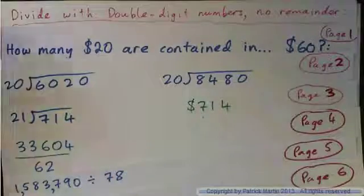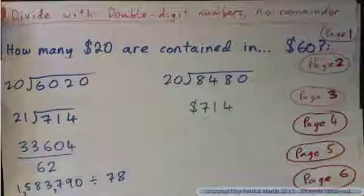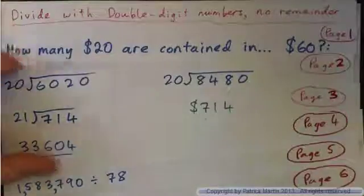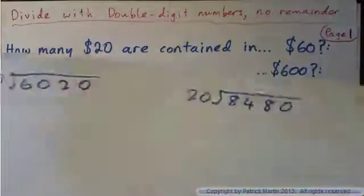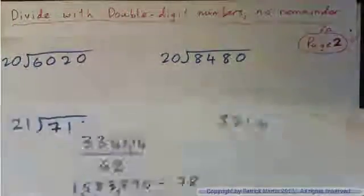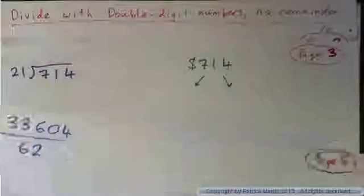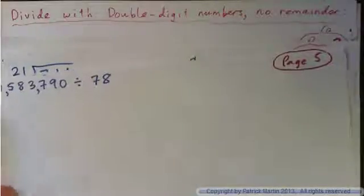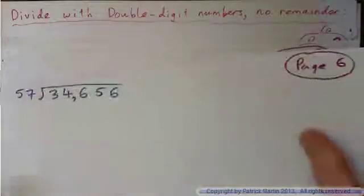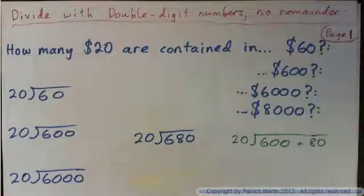In this video we are going to divide with double digit numbers where there is no remainder. We'll do these six pages — page one and two with these examples, page three, page four, page five, and page six.